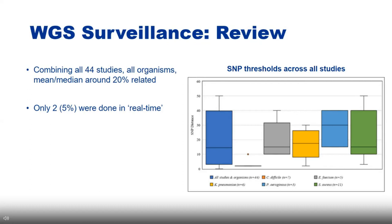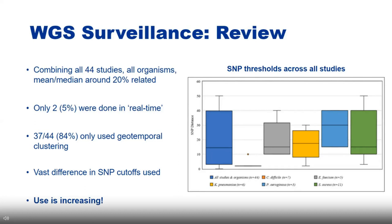Only two of the 42 studies were conducted in real time; almost all had retrospectively banked isolates. The majority of studies used geotemporal clustering exclusively — only looking at whether patients were in the same unit within the same time frame, which is restrictive. However, the use of genomic surveillance is increasing consistently over the years studied, indicating many more institutions will likely adopt this technique in the future.